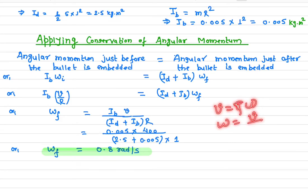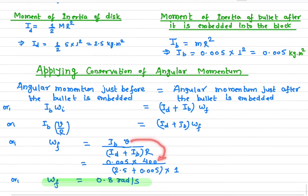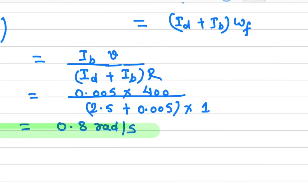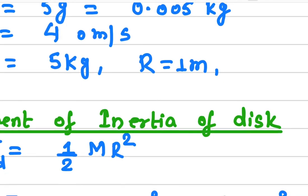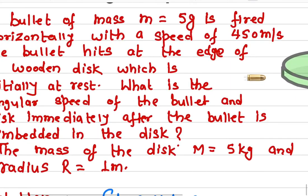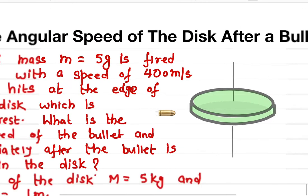Also remember that v = r × ω, so ω = v/r. We solve for ω_f by dividing both sides by (I_disk + I_bullet). The velocity of the bullet is 400 m/s (corrected from the earlier stated 450). All values are now known: I_bullet = 0.005, v = 400, so we substitute these in.